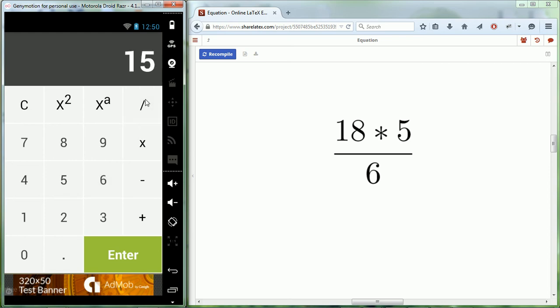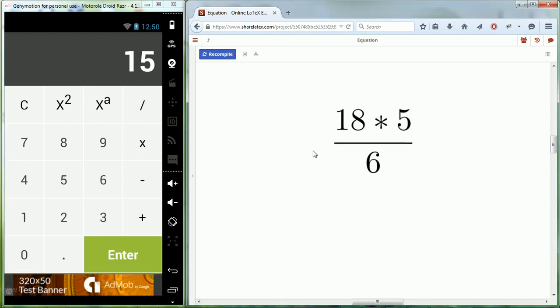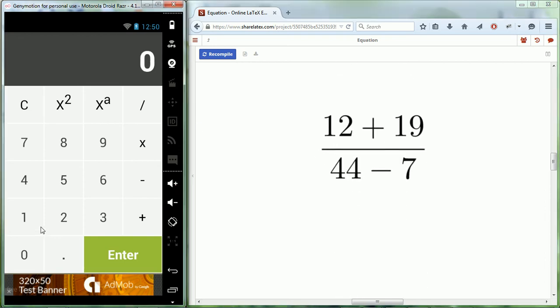We want to multiply these together, so we're going to hit multiply. Now we want to divide by 6, so we don't need to hit enter because it's already added to the shelf. We push 6 and then we divide and we get 15 as our answer. So that works really nicely.